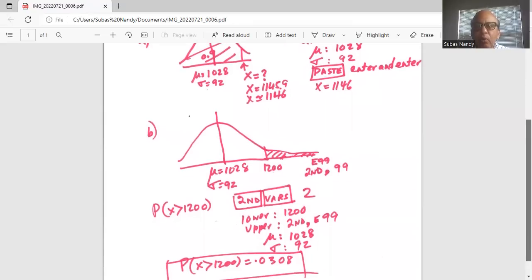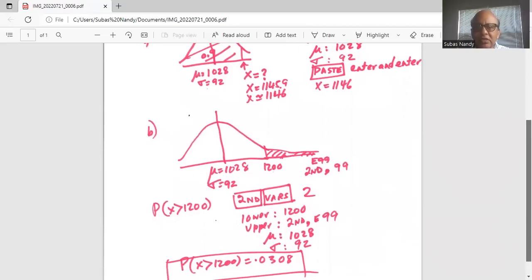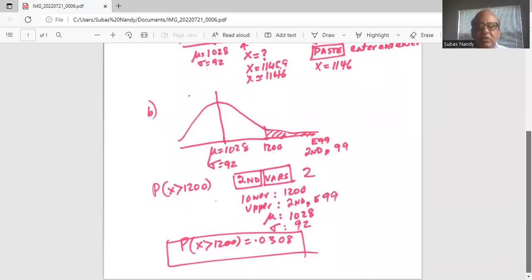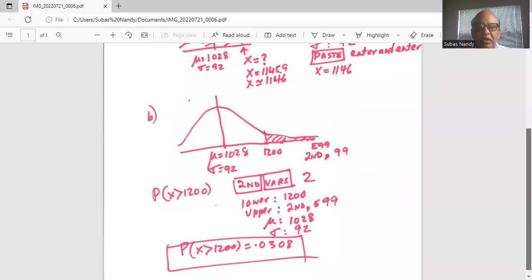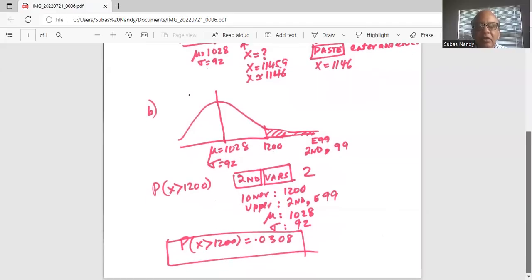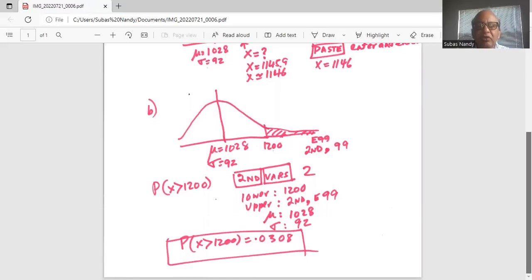The mean is 1028. Sigma is 92. I go to PASTE to enter and enter, and the probability answer of X greater than 1200 is 0.0308.